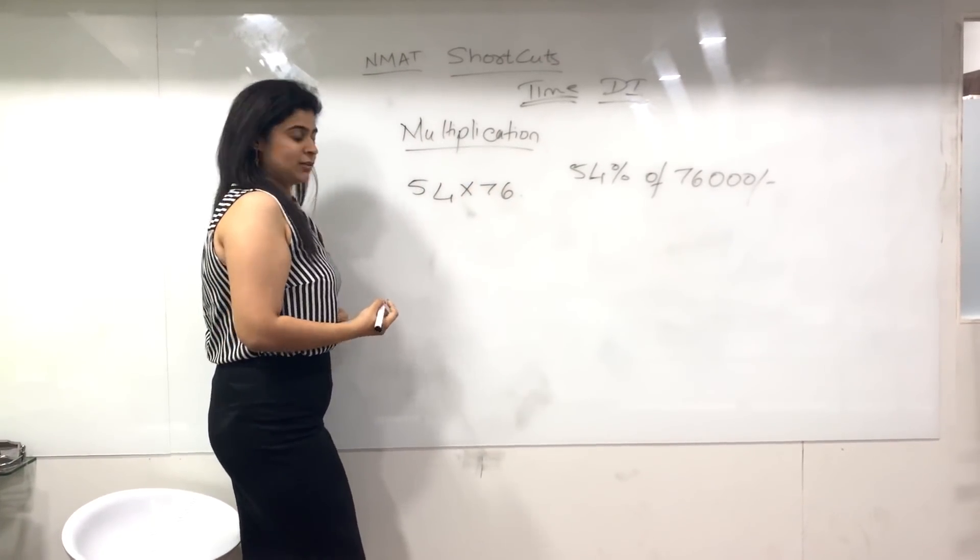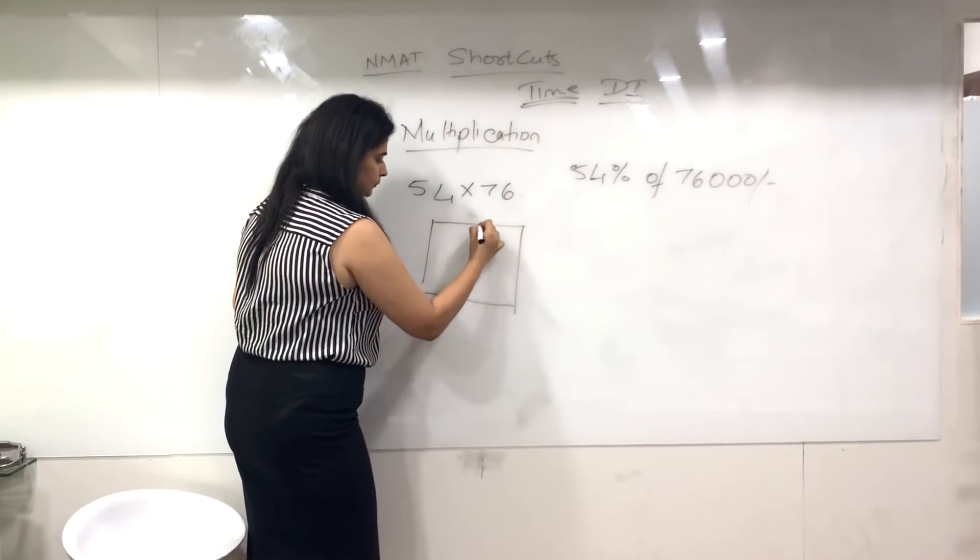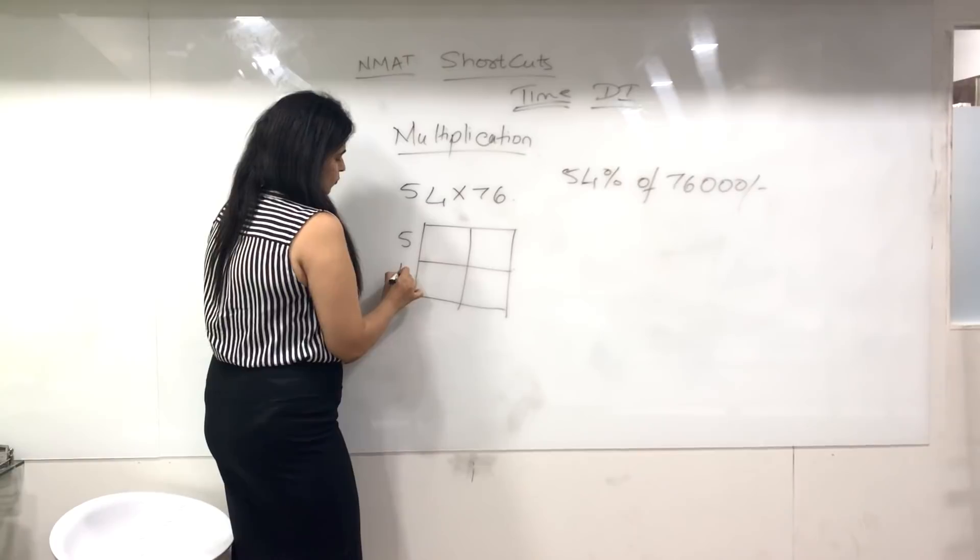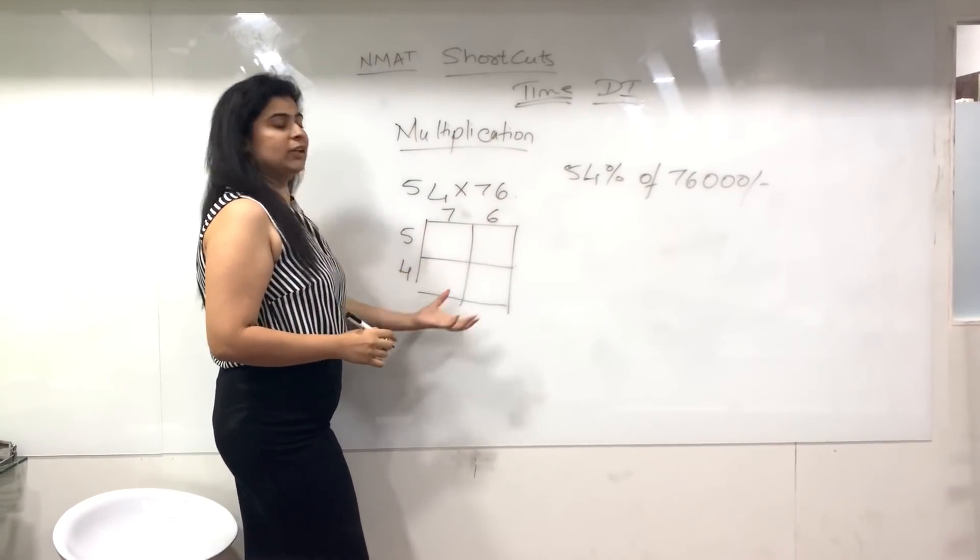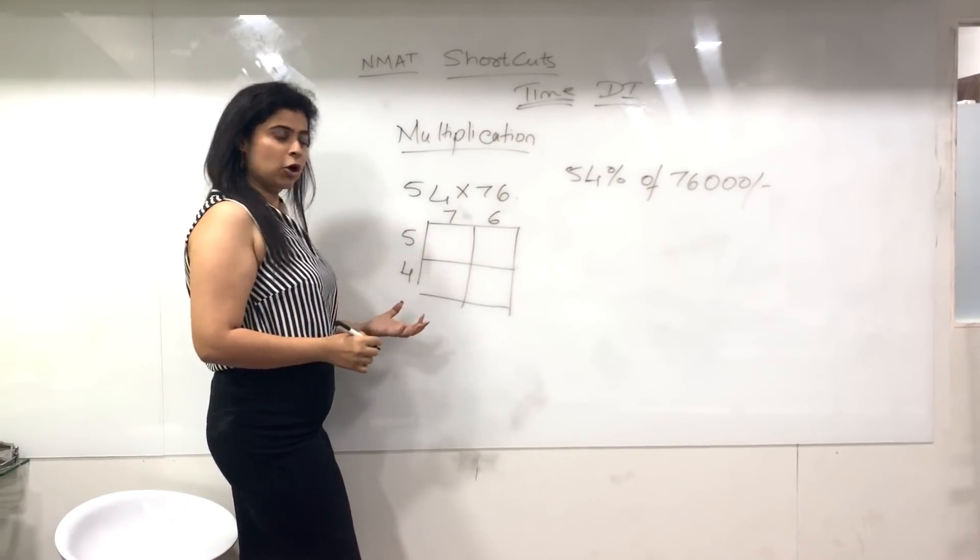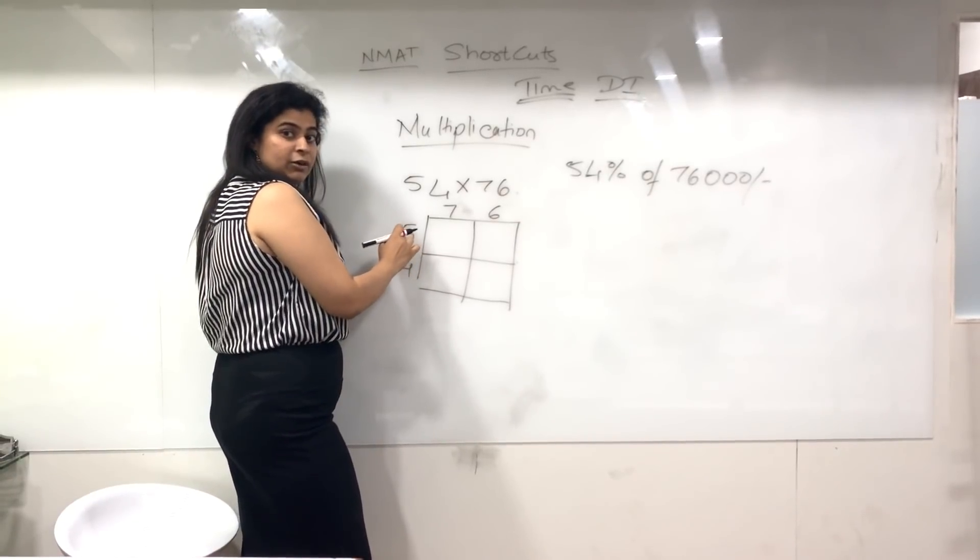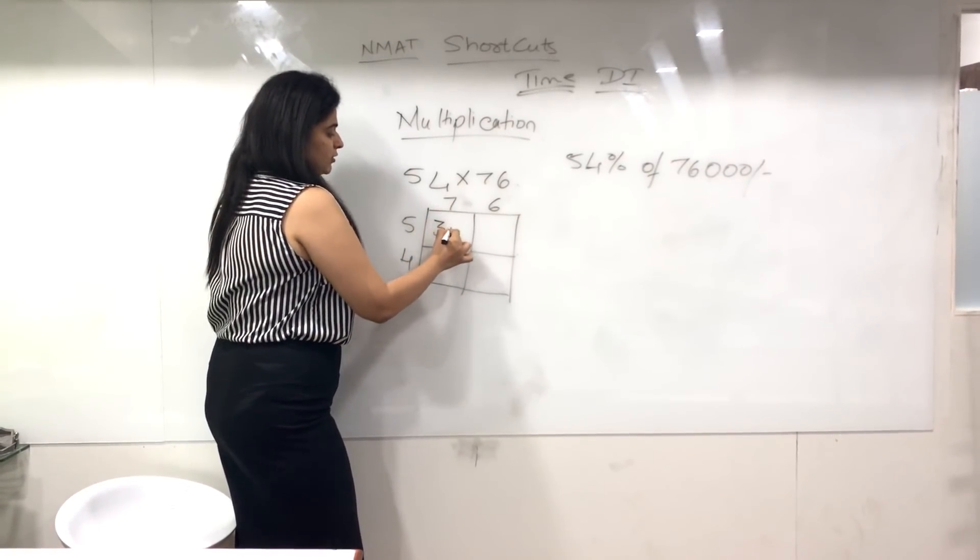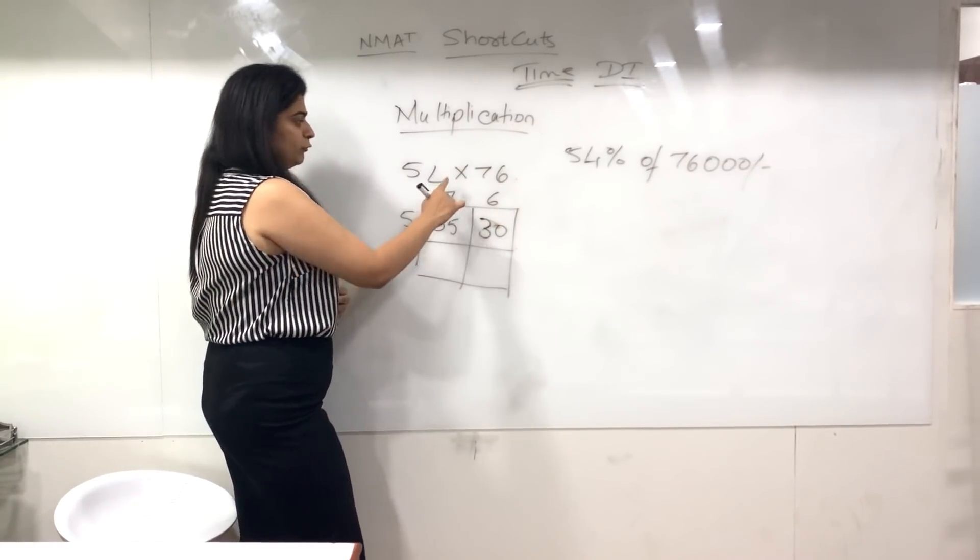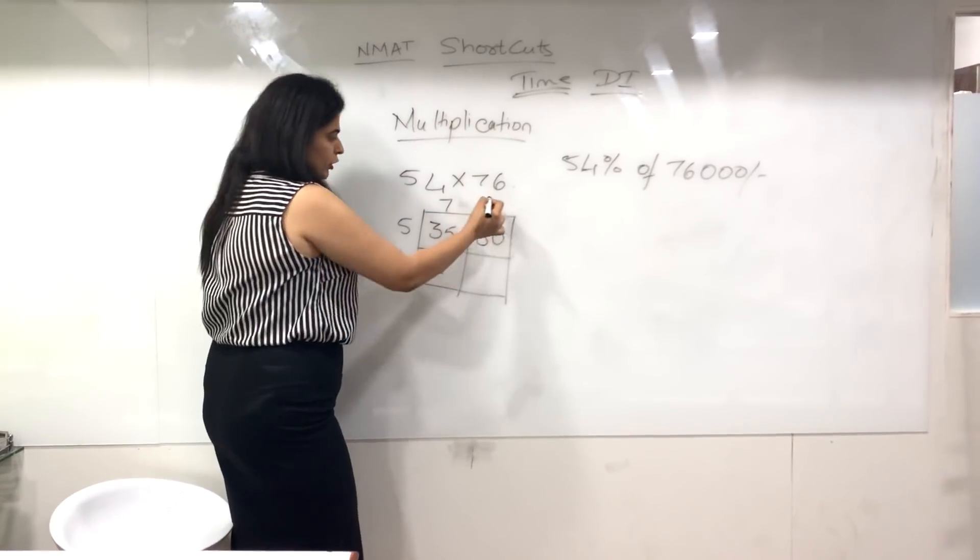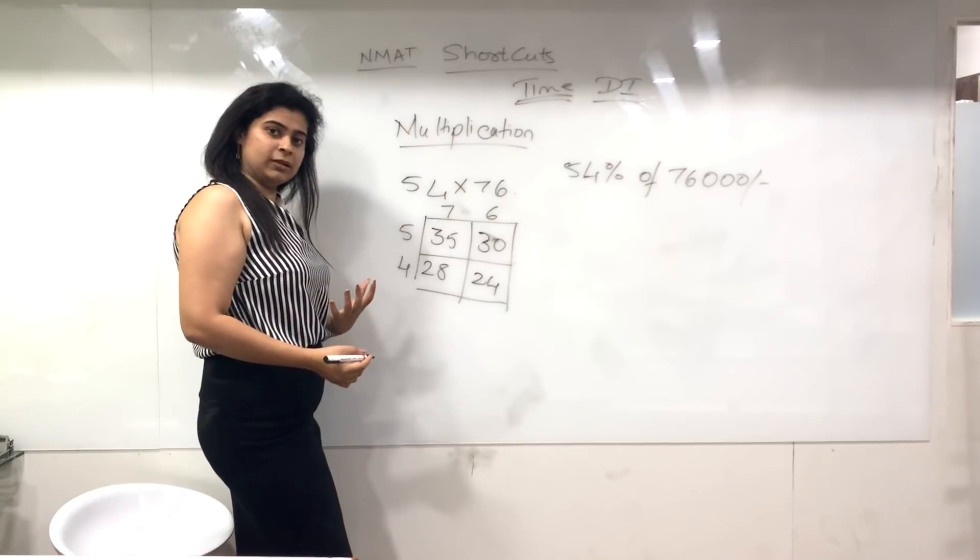This is essentially 54 into 76. Make a 2 by 2 matrix and write both numbers on the sides of your matrix. Now fill the matrix blocks by multiplying the two terms for each position: 5 into 7 is 35, 5 into 6 is 30, 4 into 7 is 28, 4 into 6 is 24.